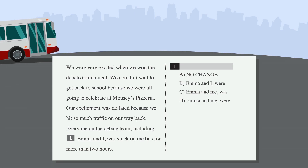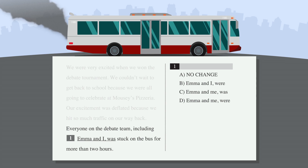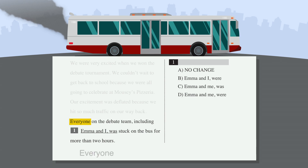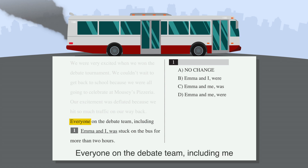Let's check out an SAT example. Everyone on the debate team, including Emma and I, was stuck on the bus for more than two hours. Our answer choices are different versions of the underlined part of the sentence, Emma and I was. Our subject is everyone, so let's drop Emma from the sentence to see how the pronoun I sounds: everyone on the debate team, including I — that doesn't sound good. How about everyone on the debate team, including me — that's much better. The subject of this sentence is everyone, not I, so we need to use the objective form of the pronoun me.